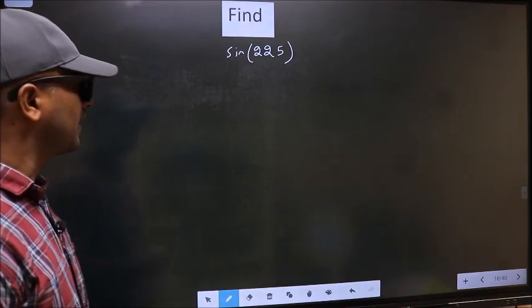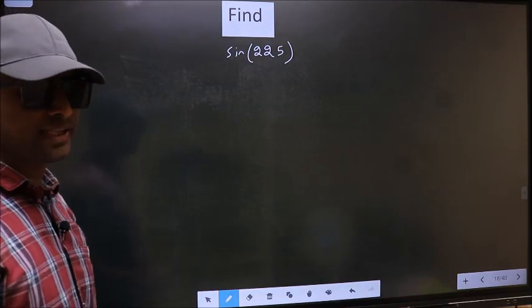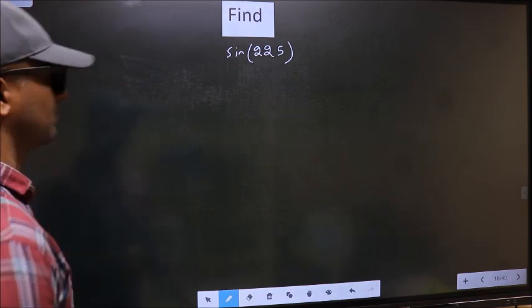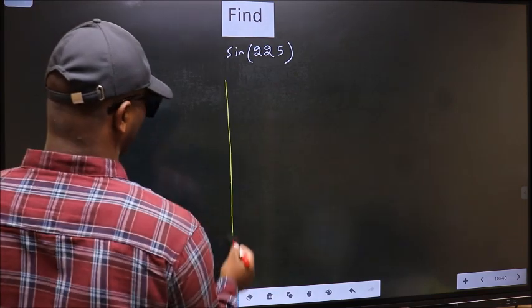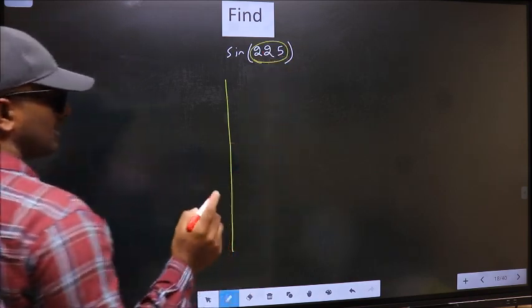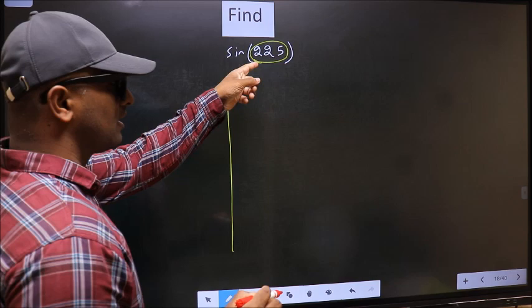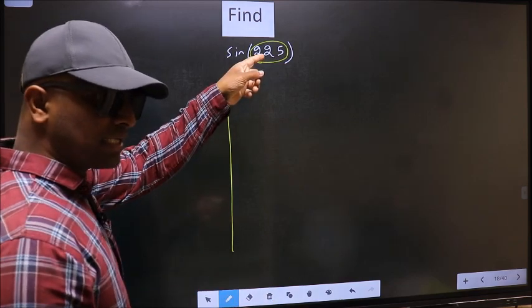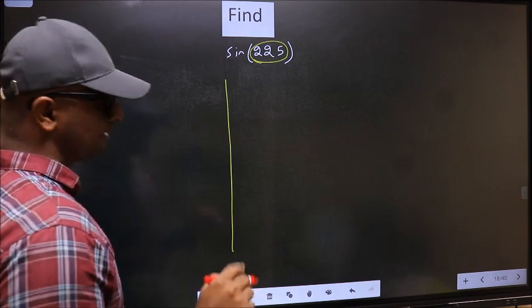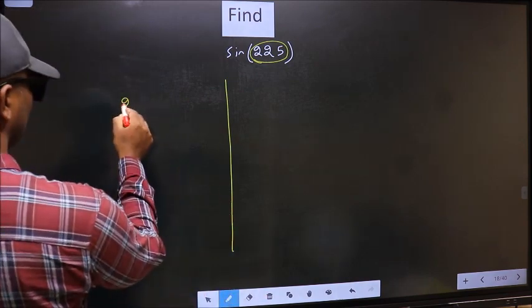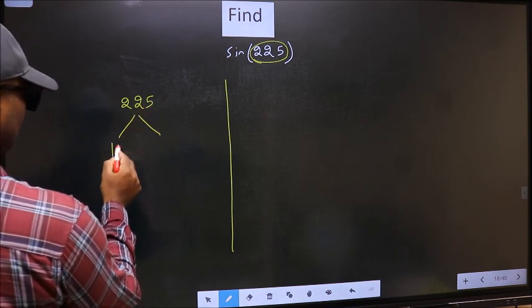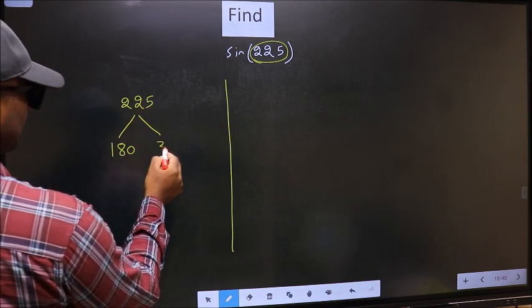To find sin(225), we should follow this method. Here we have 225. Now you should check which two multiples of 180 does 225 lie between. 225 lies between 180 and 360.